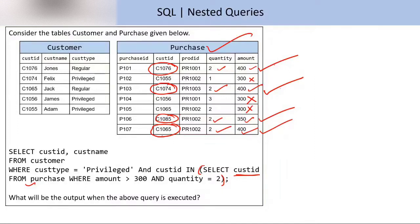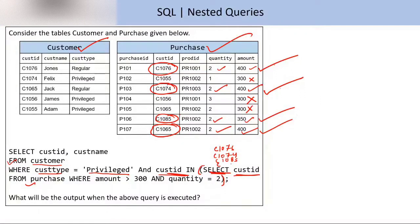Now we solve the outer query. First we check FROM: we are considering the customer table. Then we check WHERE: customer type must equal 'privileged', AND customer ID must be IN the result of the inner query — which gave us the four IDs: C1076, C1074, C1085, and C1065.